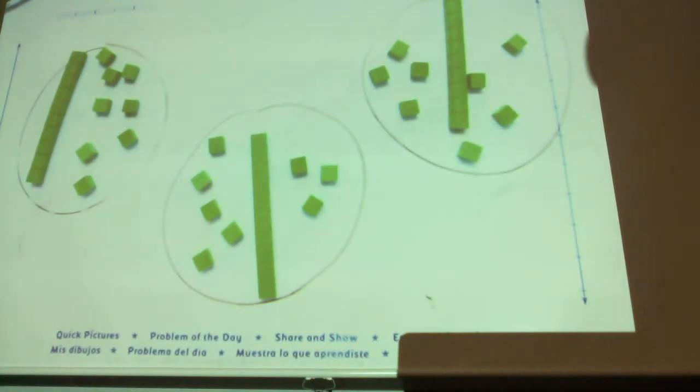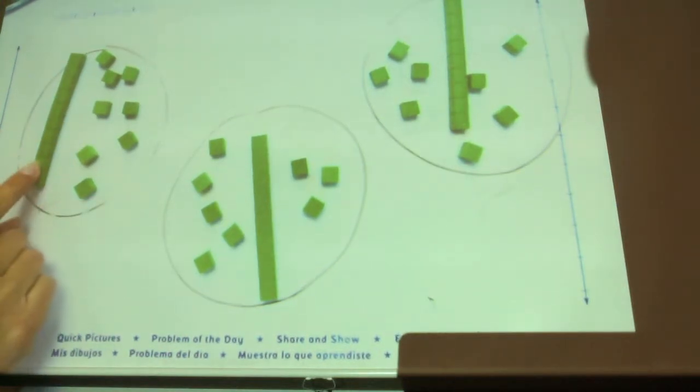How many tens are in each circle? Raise your hand if you can tell me how many tens are in each circle. How many? One. Okay, let's try again. How many tens are in each circle? Raise your hand when you can tell me how many tens. How many tens are in each circle? One. There's one ten in each circle.